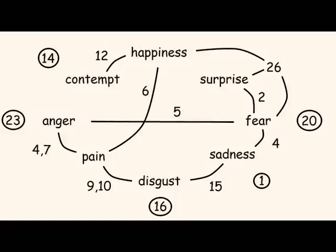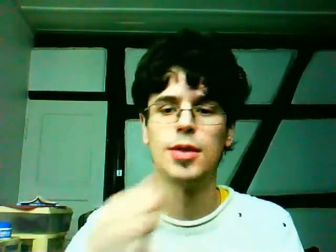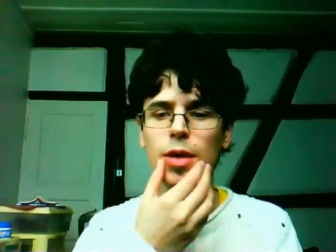Surprise shares number 2 and number 26 with fear, and to some extent number 5 — opening the upper lid. But fear is really opening the upper lid completely. It also has number 4, which it shares with sadness, and number 20, which is specific to fear — it's stretching the mouth horizontally. So fear adds number 20 and number 4. Number 20 is stretching the mouth horizontally — not smiling, not sad, but horizontally. So when you open the mouth and stretch, it's like that.